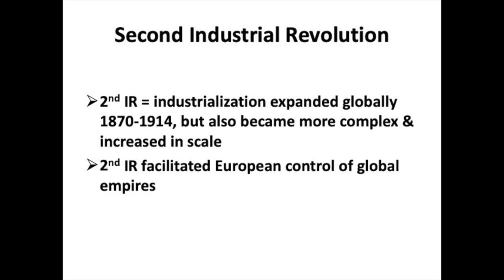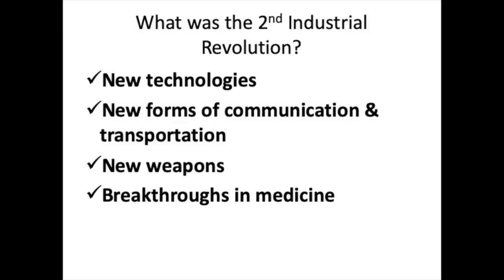Here are the big ideas — what the College Board calls key concepts — that we are going to examine. The second industrialization facilitated European control of global empires. And here are the breakthroughs that made up the second industrial revolution of the late 19th century: new technologies, new forms of communication and transportation, new weapons, and breakthroughs in medicine.